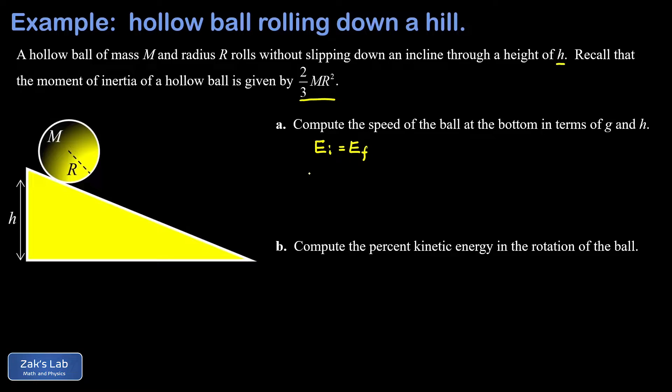We have to remember that the gravitational potential energy is given by mg times the center of mass y-coordinate for an extended body. So we have mgy center of mass for our initial energy. That's all gravitational potential energy. And then in our final state, that's all gone. It's all been transformed into kinetic energy.